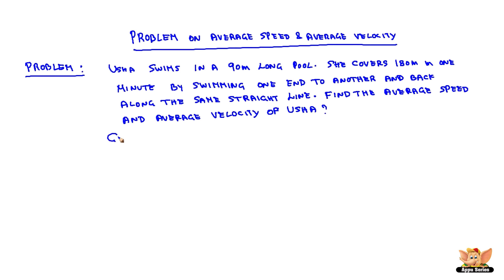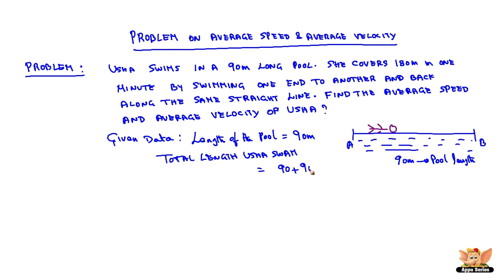Let us see what is the given data. If we see the ends of the pool as A and B, the length of the pool is 90 meters. The total length Usha swam is, since she swam back and forth, 90 plus 90 meters, which is 180 meters.